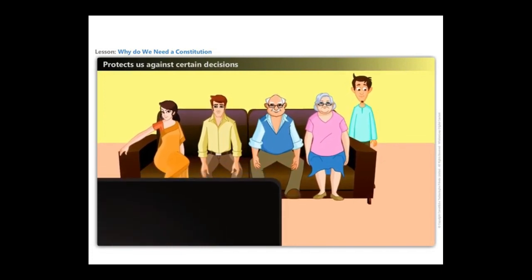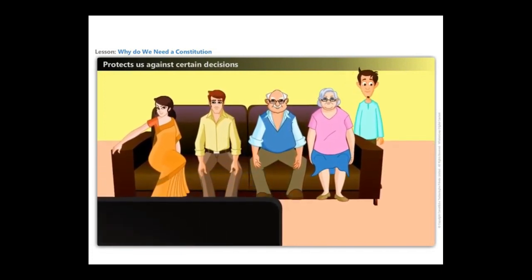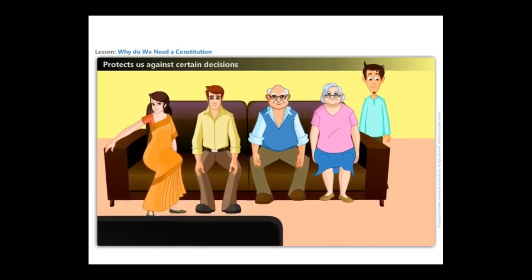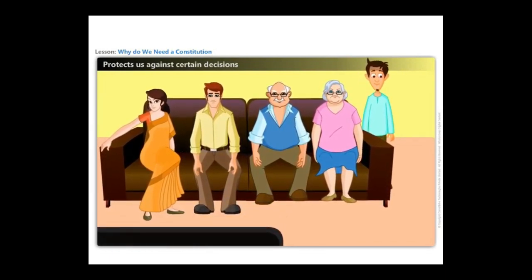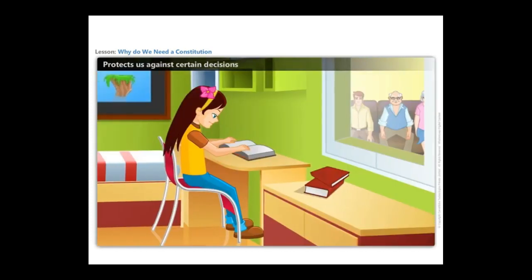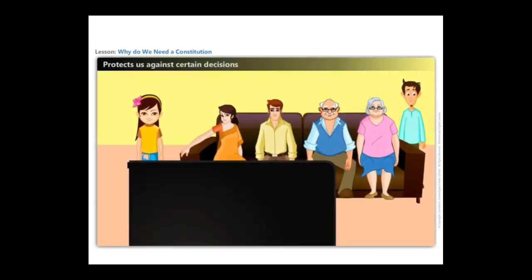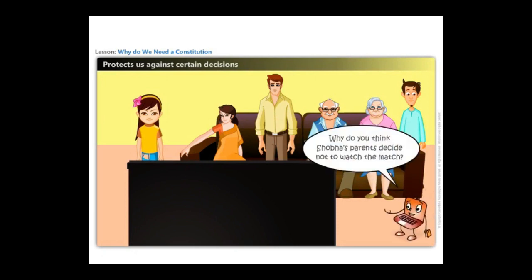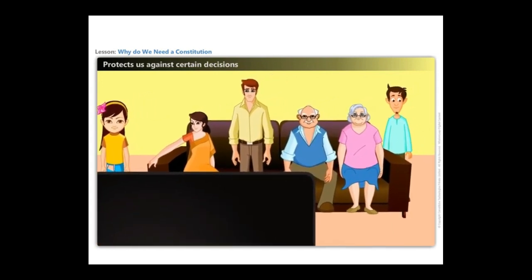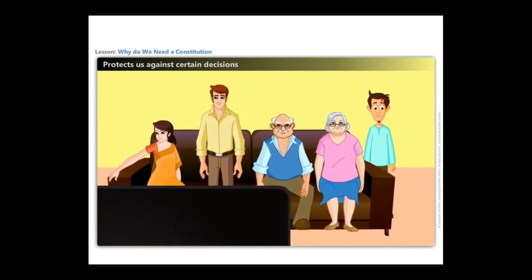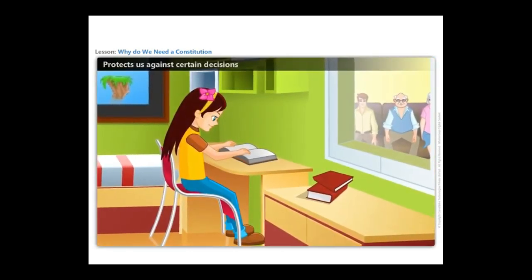Today is Sunday. Everyone in Chobha's house is watching the cricket match except Chobha, who is studying for the test on Monday. She is also tempted to watch the game, and as she gets to hear some noise from the television, she comes out from her study room to know whether somebody is out or it is a six. Then Chobha's parents make the decision to switch off the television. Though all of them want to watch the match, Chobha's parents switch off the television so that their daughter does not get distracted from her studies.